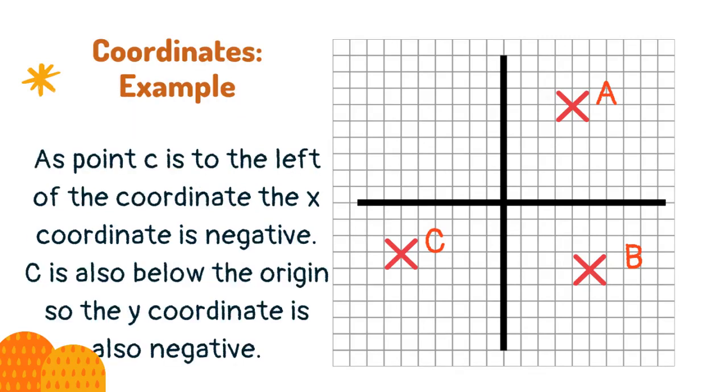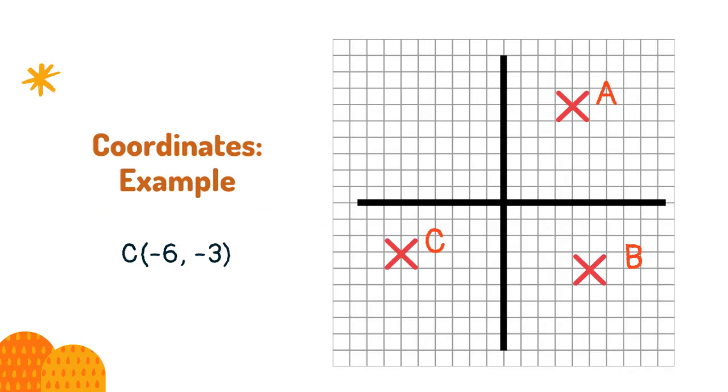As point C is to the left of the coordinate the x-coordinate is negative. C is also below the origin, so the y-coordinate is also negative. C is minus 6, minus 3.